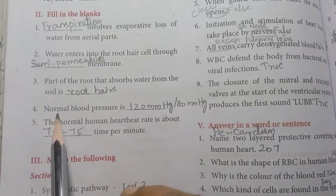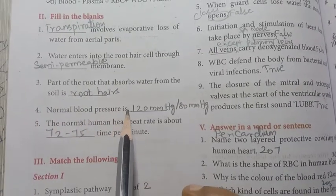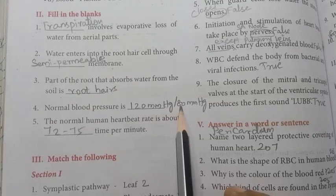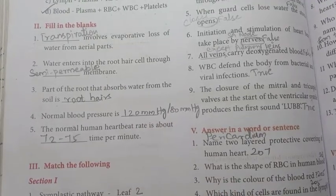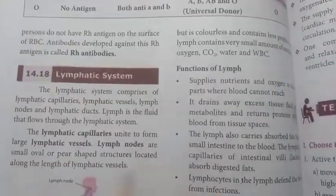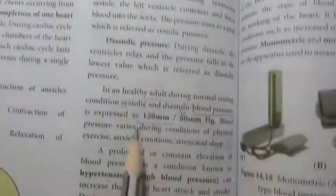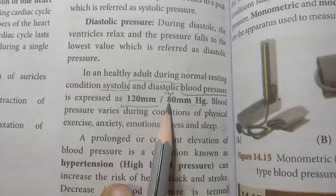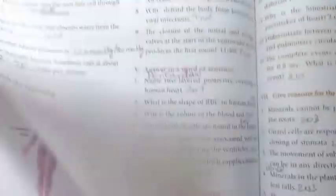Then four: normal blood pressure is 120 mmHg, then 80 mmHg. Systolic and diastolic pressure are normal blood pressure. 120 mm or 80 mmHg, this is the answer.